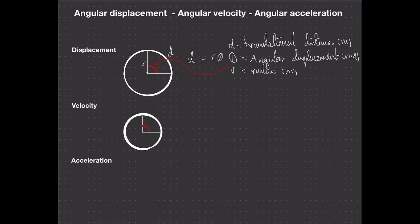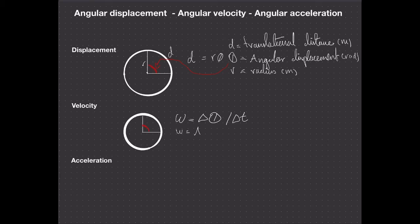We usually give the symbol for angular velocity as omega, or lowercase omega, which looks like a wobbly W. We give it as omega equals the change in angular displacement over the time it took for that displacement to occur — the change in angular displacement over the change in time. Omega, our angular velocity, is measured in radians per second.